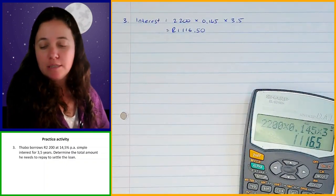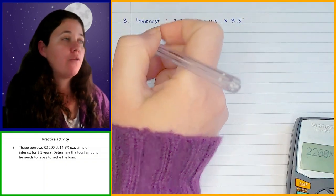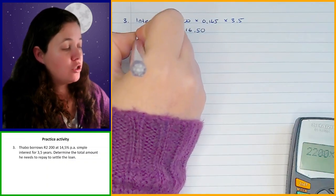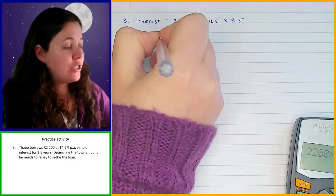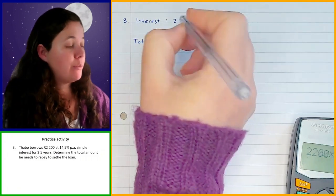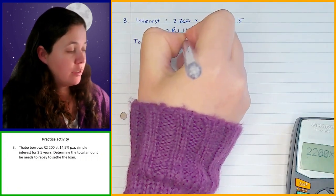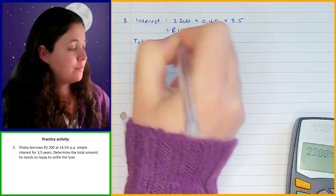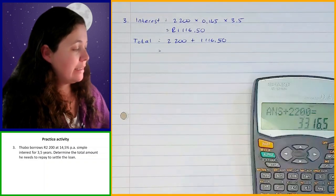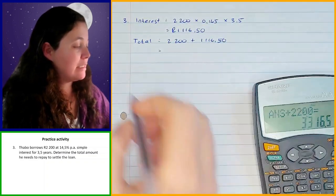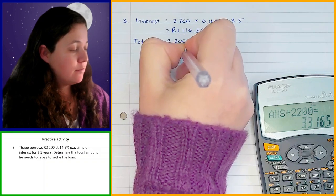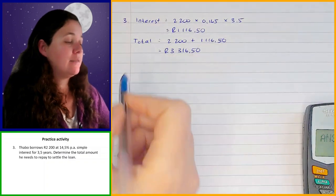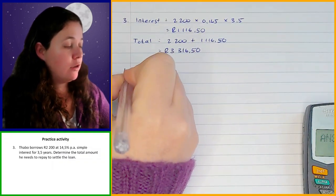That's the total amount of interest. Now we need to work out the total amount he'll have to repay. We add the interest to the amount he borrowed: 2,200 plus 1,116 rand 50 gives us 3,316 rand 50. That's the total amount of money he would have to repay at the end of the three and a half years.